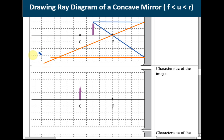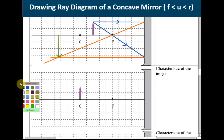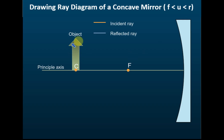The rays converge here, so the image is at this point. To understand why the arrow is inverted: the light comes from the tip of the object, so the image tip must also correspond to the object tip — that is why the image is inverted. Here we use rule two and rule three; rule one cannot be used because the light ray would fall out of the range of the mirror.